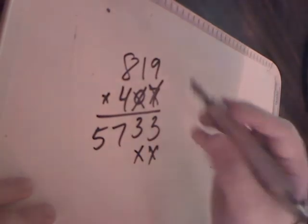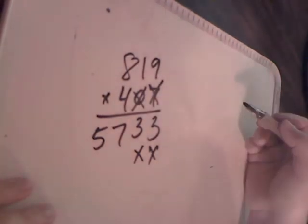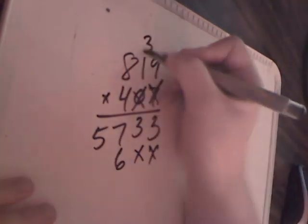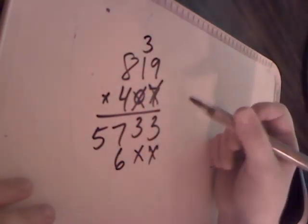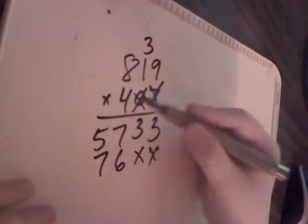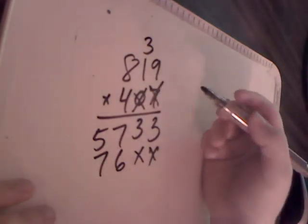Now we have 2 x's. So x here, x there. 4 times 9 is 36. 4 times 1 is 4. Plus 3 is 7. And then you have 4 times 8, which is 32.